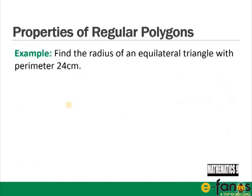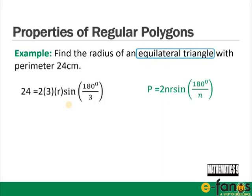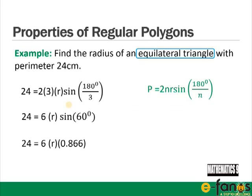Example: find the radius of an equilateral triangle with perimeter 24 cm. Perimeter = 2nR sin(180/n), so 24 = 2 × 3 × R × sin(60°) = 6R × 0.866 = 5.196R. Therefore R = 24 / 5.196 = 4.62 cm.